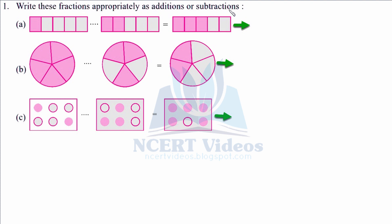Question 1: Write these fractions appropriately as additions or subtractions. We have three questions: a, b, and c. We have certain boxes or figures that are being shaded. We have to use our logic to see through the problem whether they are being added up or subtracted. In the final you can see an equal to sign. In the first case, one part is shaded, and when added with two other shaded parts it gives us three shaded parts as shown in the figure.